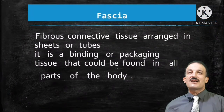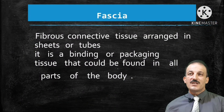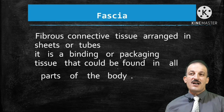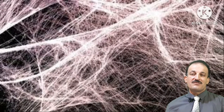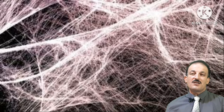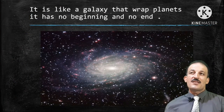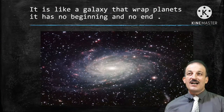First of all, we will start with fascia. Fascia is a fibrous connective tissue arranged in sheets or tubes. It is a binding or packaging tissue that can be found in all parts of the human body. As seen in this 3D microscopic figure, fascia is like a galaxy that wraps or nests the planets — it has no beginning and no end.